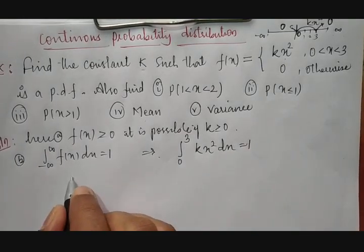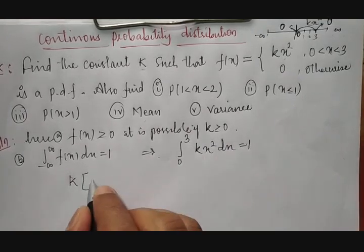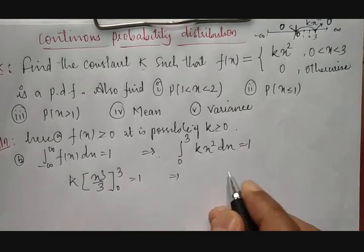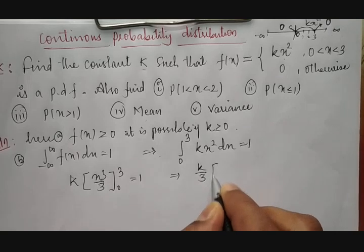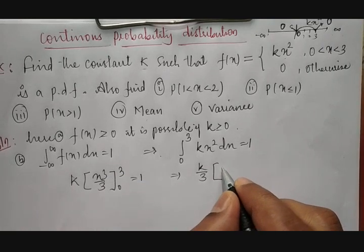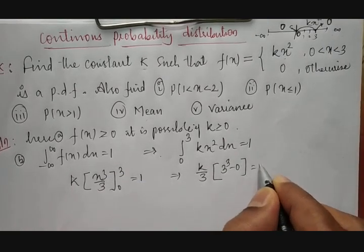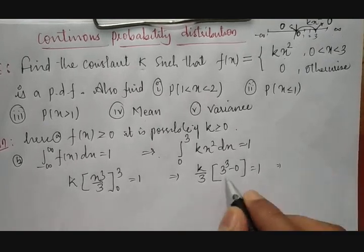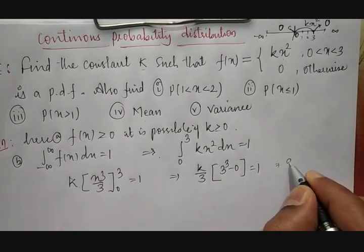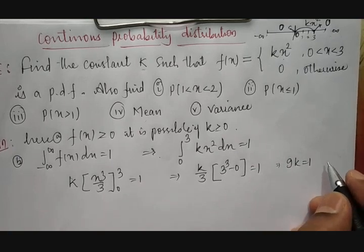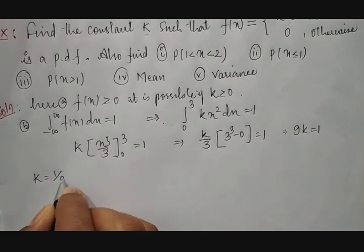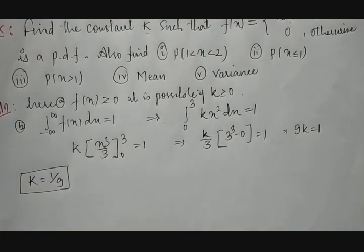Taking k as a common factor, the integral of x² is x³/3, evaluated between 0 and 3, equals 1. Therefore k/3 · (3³ − 0) = 1. Simplifying: 3 and 3 cancel giving 3², so 9k = 1, therefore k = 1/9.